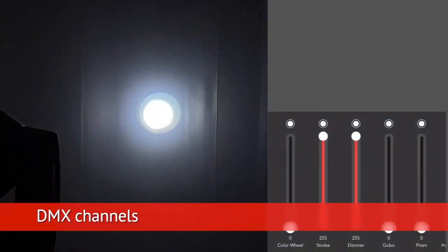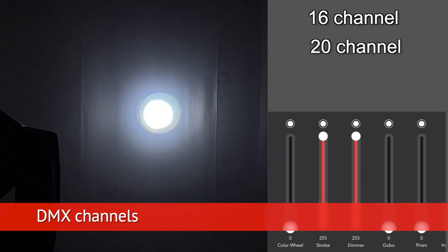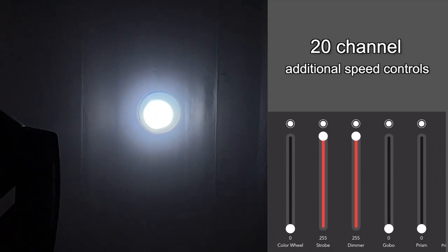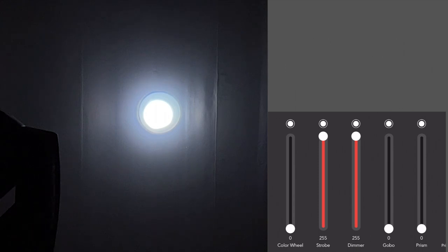This light has either a 16-channel or a 20-channel DMX mode. The 20-channel mode is just the same as the 16, but it adds speed controls for the pan, tilt, and color prism and gobo wheels. And I'm going to be controlling it using an app on my iPad called Vibrio.